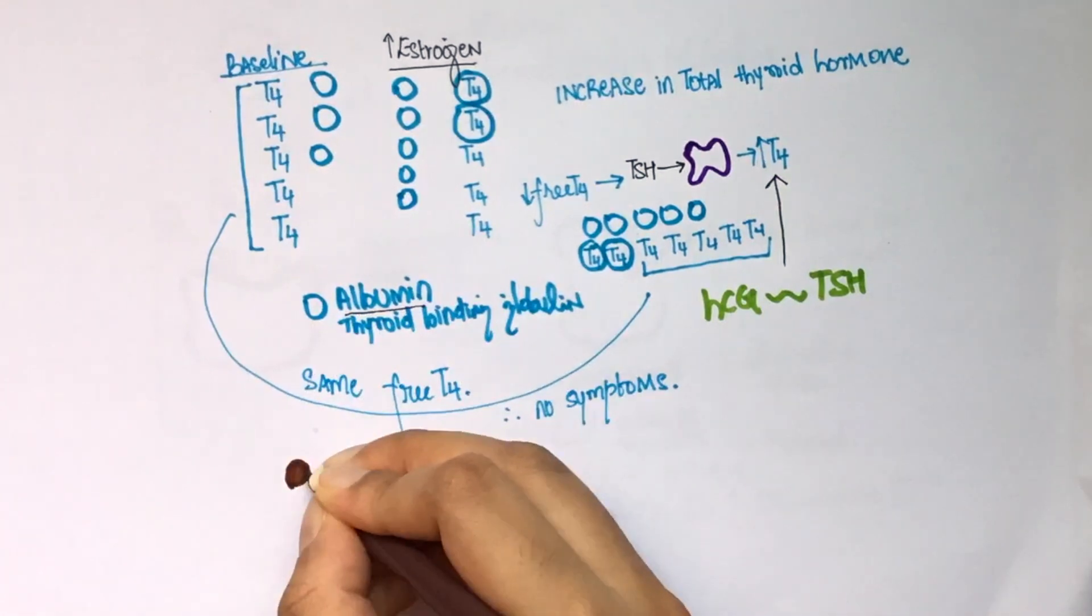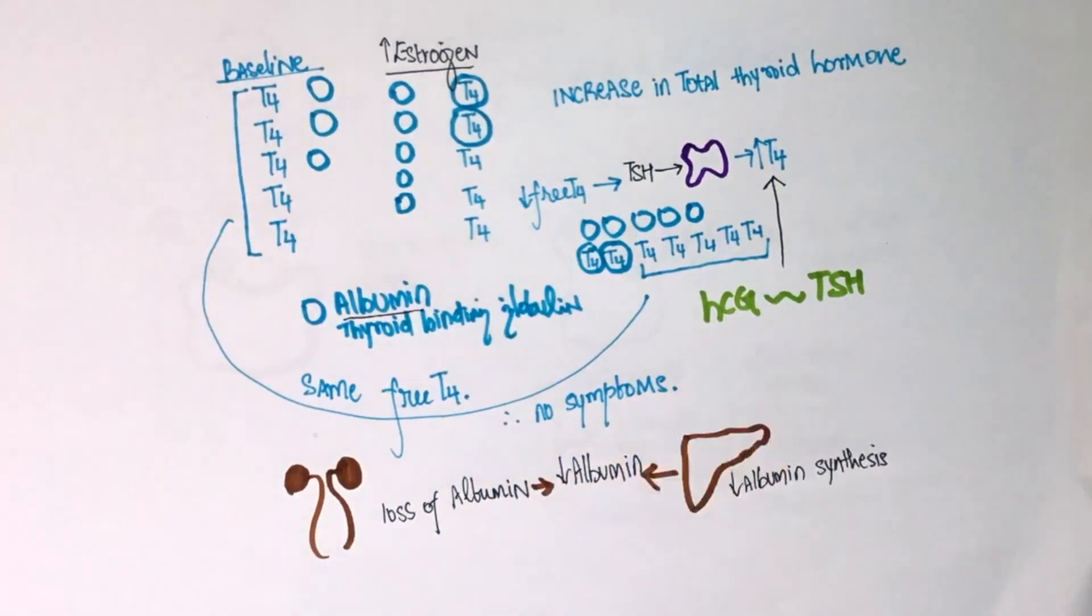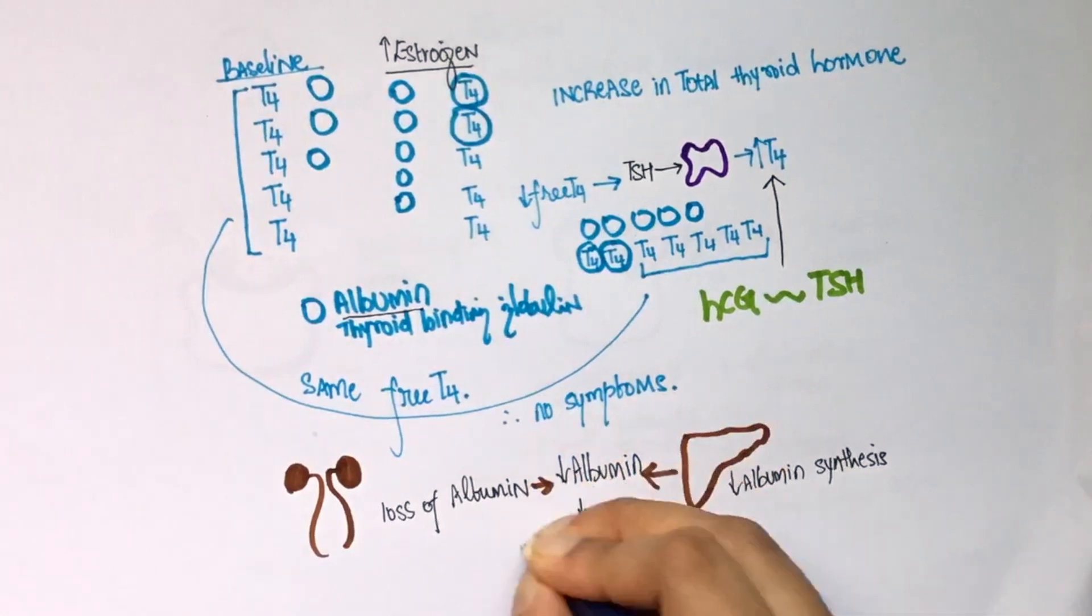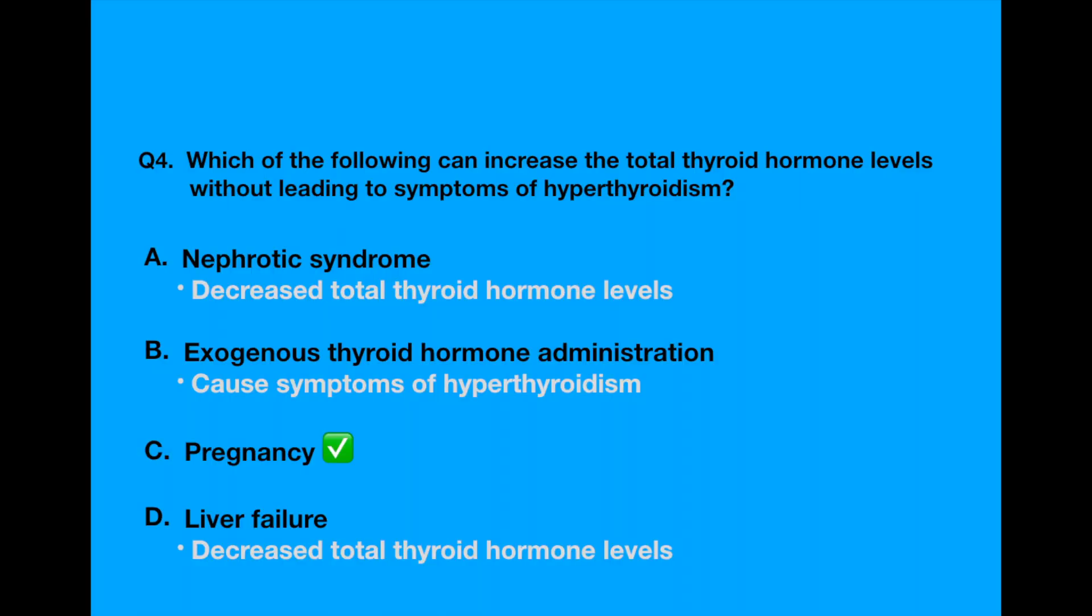Nephrotic syndrome causes loss of proteins like albumin. Liver failure leads to decrease in albumin synthesis. Since proteins available to bind to thyroid hormones is less, these two conditions can lead to decrease in total thyroid hormone levels. Exogenous administration of thyroid hormone can lead to symptoms of hyperthyroidism.